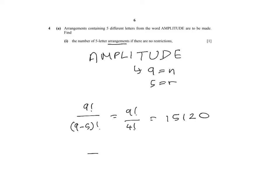It is the same method as doing 9 times 8 times 7 times 6 times 5, where any of these letters can be the letters above from amplitude.